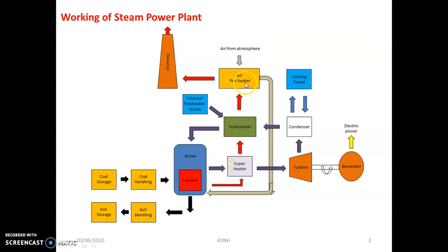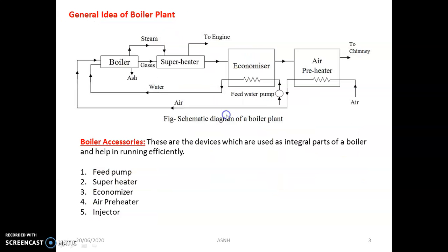They are situated in line and placed between the combustion chamber — you can see it as the boiler furnace — and the chimney area. Here you will get an idea about four important accessories of the boiler used in the steam power plant. The first is the superheater, the second is the economizer, the third is the feed water pump, and the fourth and most important is the air preheater.